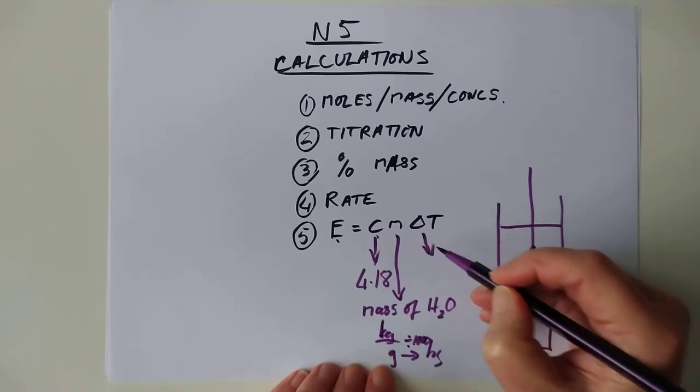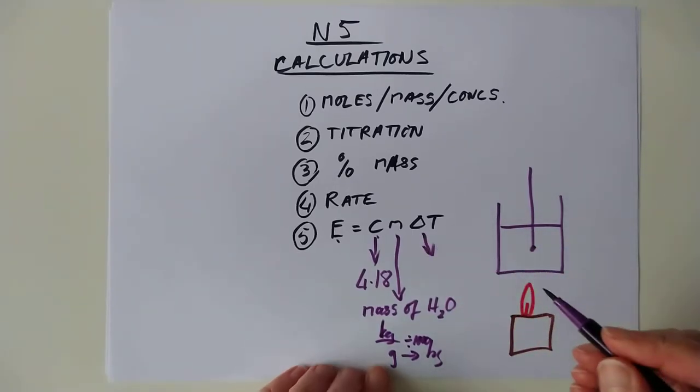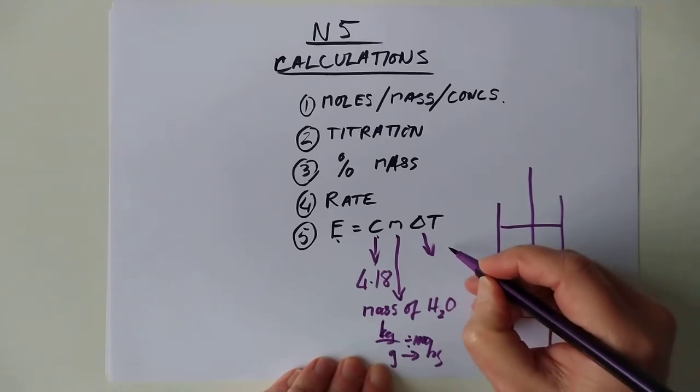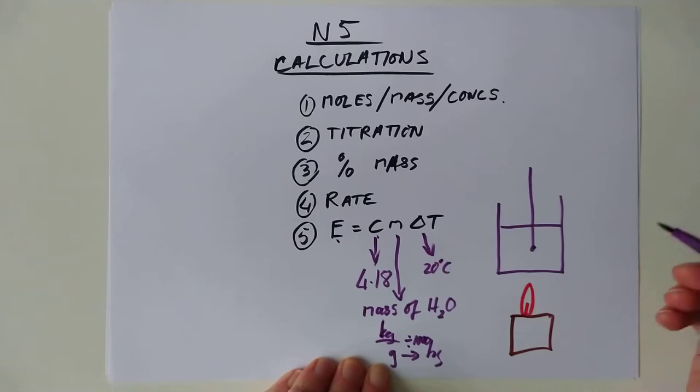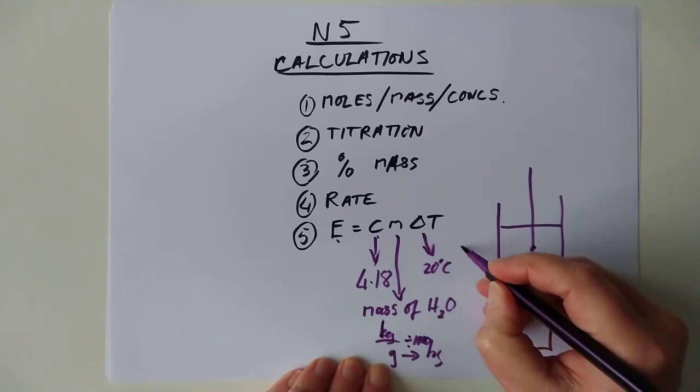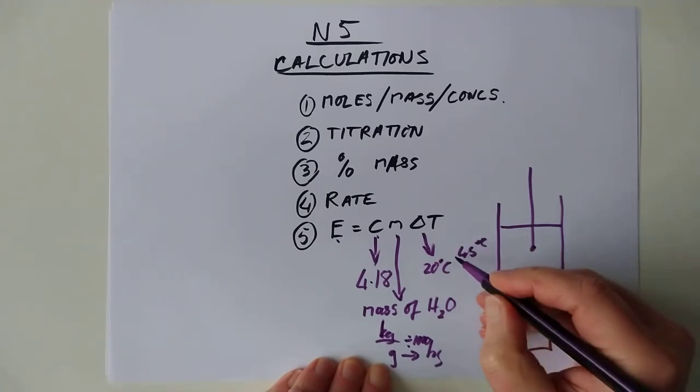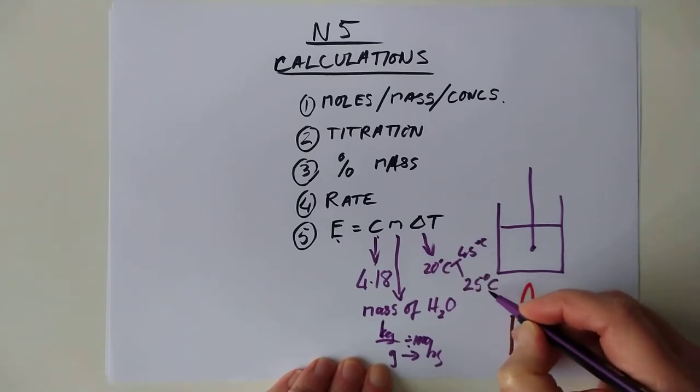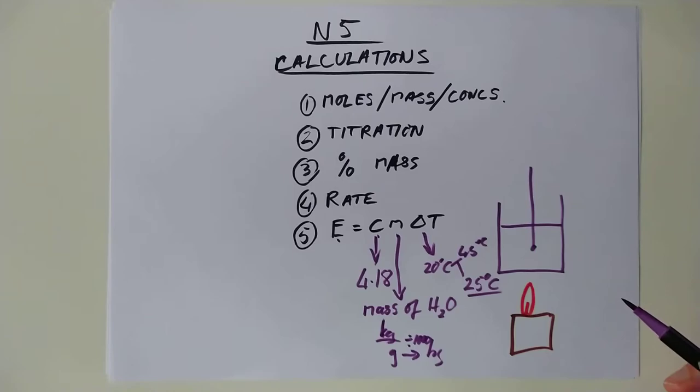And lastly, we've got the delta T, which is the change in temperature. So if you started at 20 Celsius and you heated up the water to 45 Celsius, then the change between these two is 25 degrees C. Let me pause this, and I'll try and find a real-world example from the SQA.